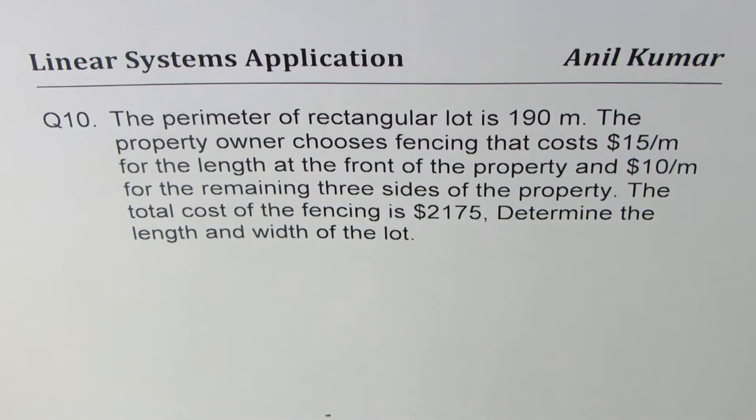Now here is a test question for you, question number 10. The question is, the perimeter of a rectangular lot is 190 meters.